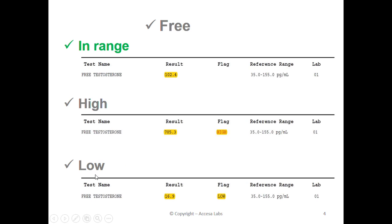Now we will take a look at a low result. Once again, we will look for our result under the result heading. This report has a result of 16.9. You may also notice a low notation under the flag header. Based on Quest Diagnostics reference range shown here, any result below 35 represents a low result. Therefore, this sample report represents a low result.